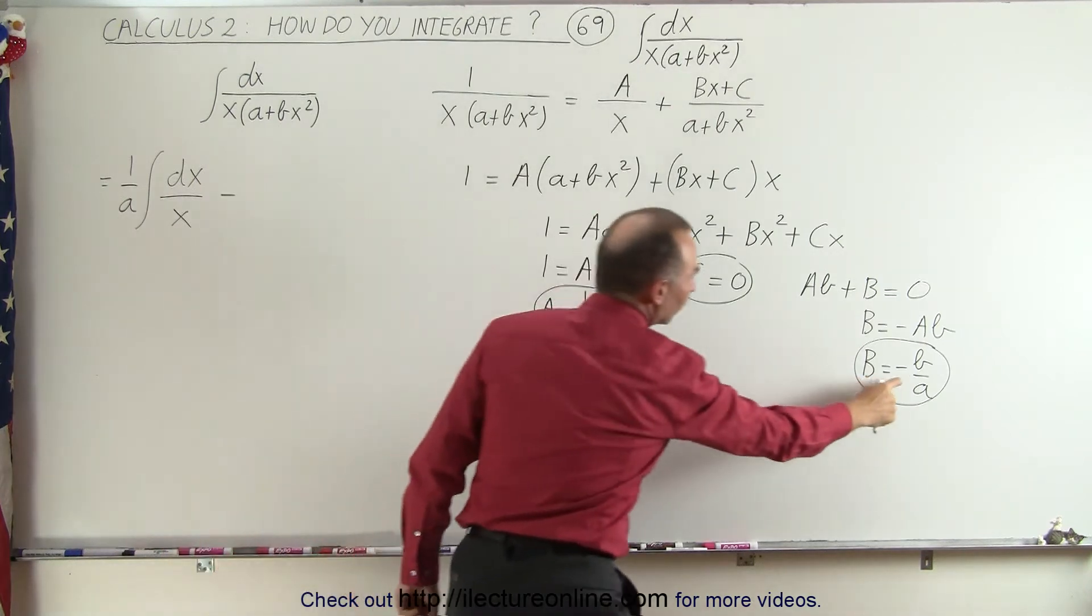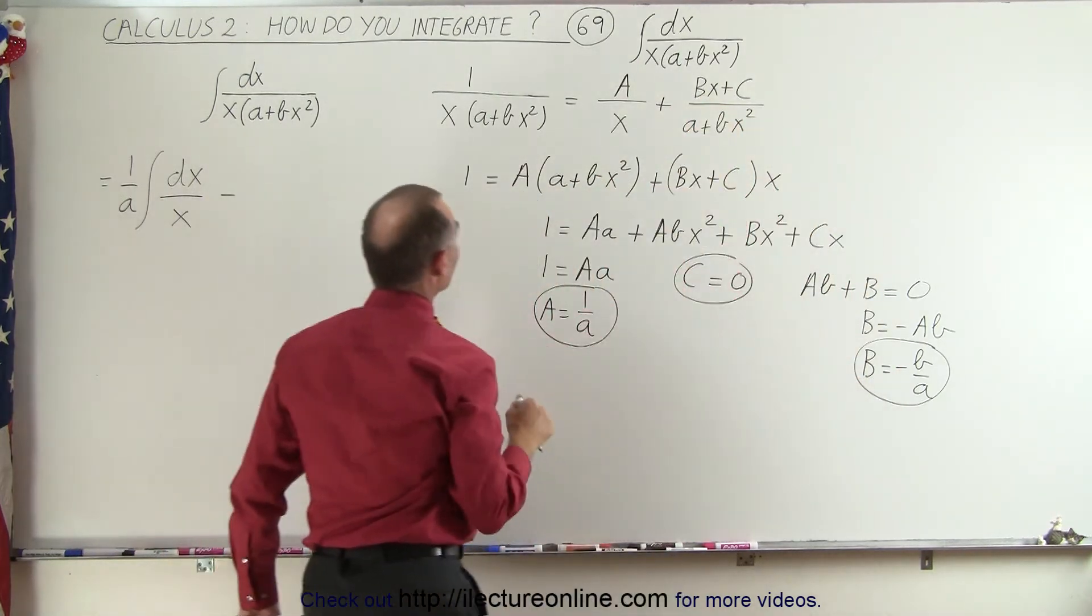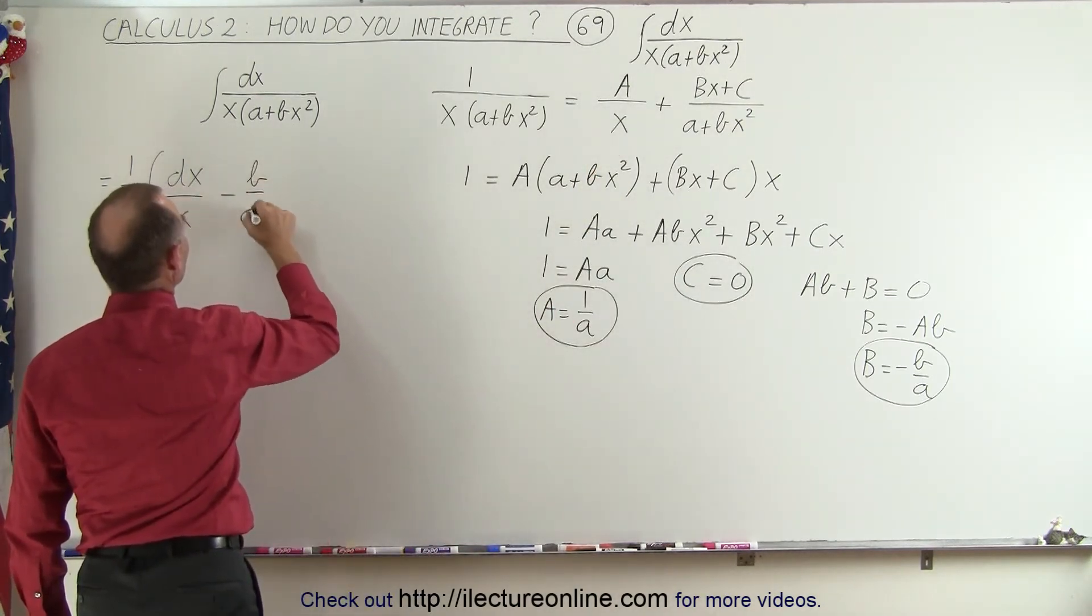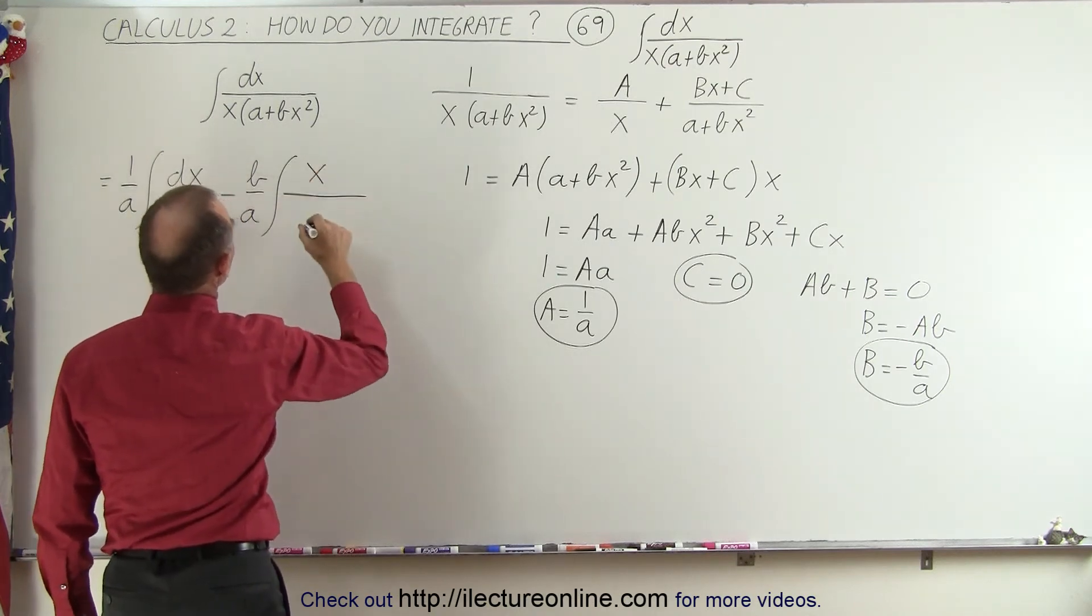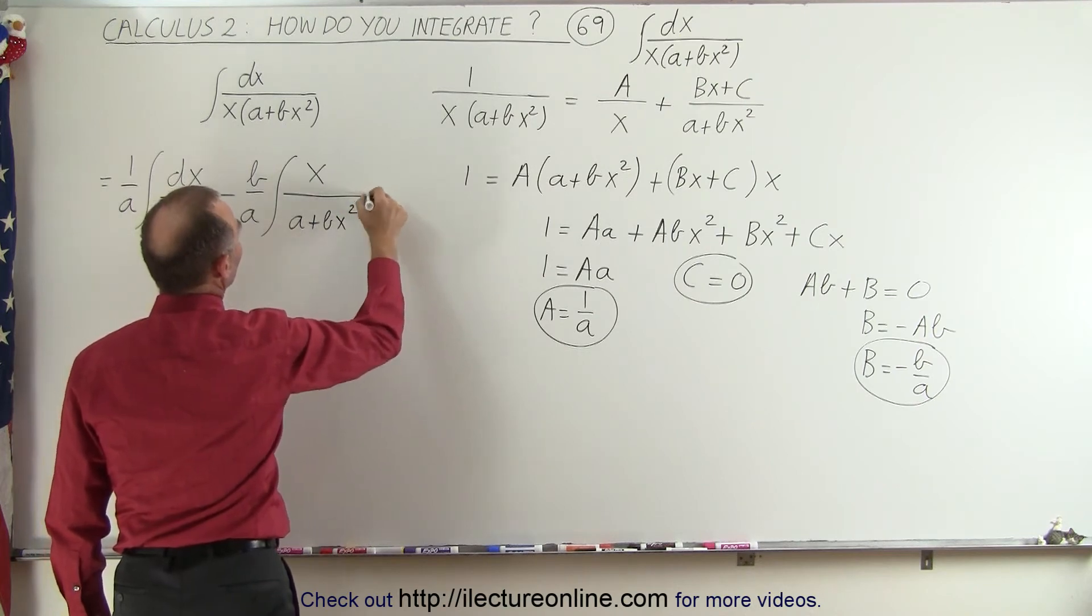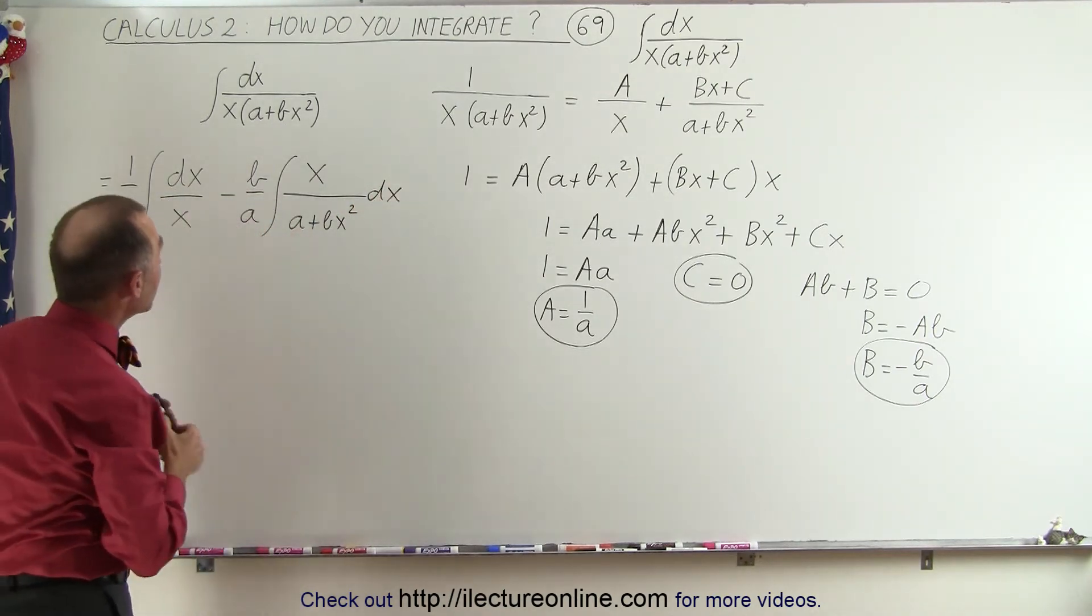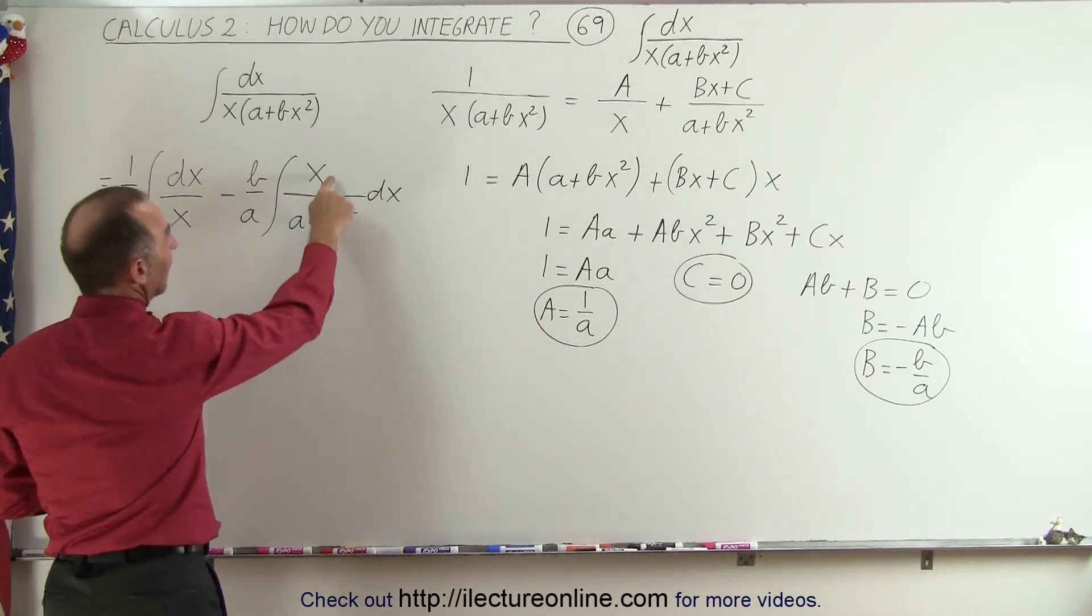because we have a minus b over a here, so the b becomes b over a. So, and the c is 0, so we can pull out the b over a out of the integral sign times the integral of x divided by a plus bx squared times dx. Now,